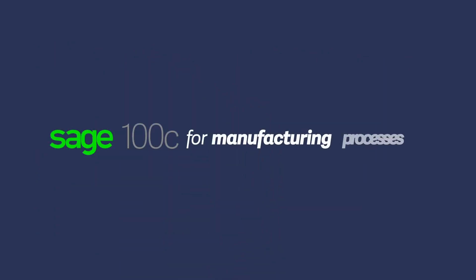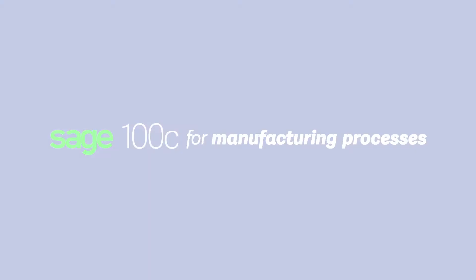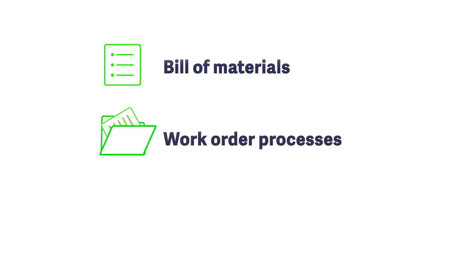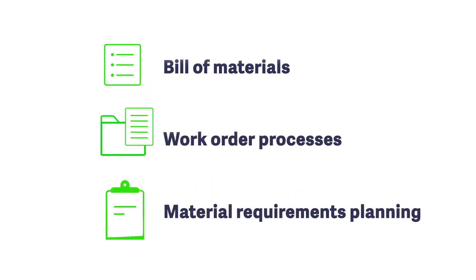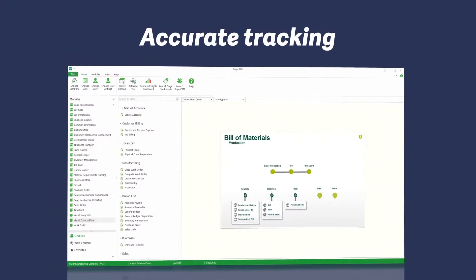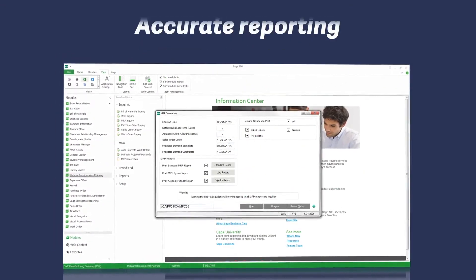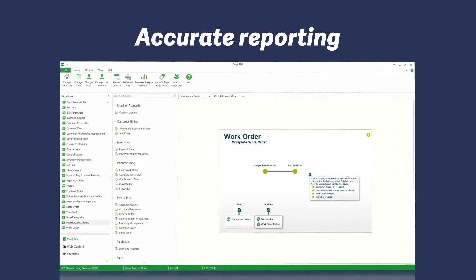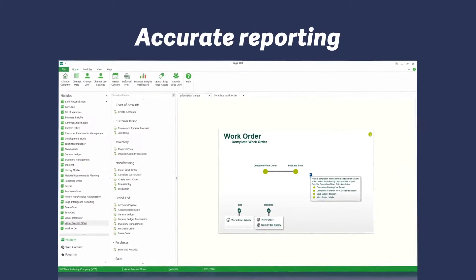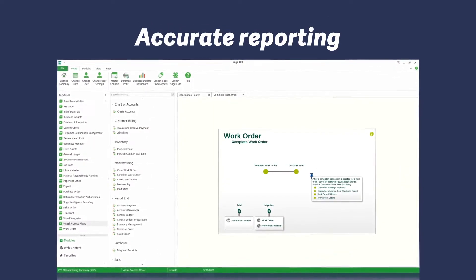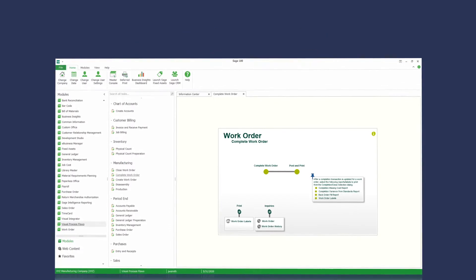If you're a light manufacturer, managing things like bill of materials, work order processes, and material requirements planning is critical to your success. With Sage 100C, you'll have detailed and accurate tracking and reporting throughout the entire manufacturing process. When goods are finished, they can be completed in Sage 100 Inventory Management and Sales Order Management.